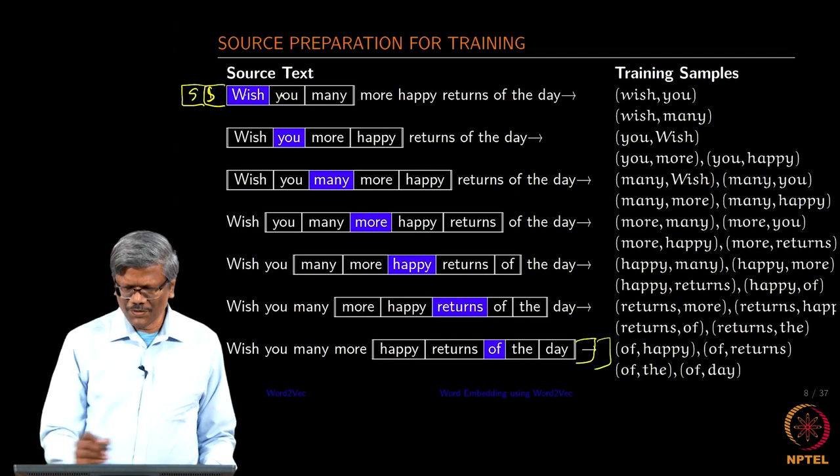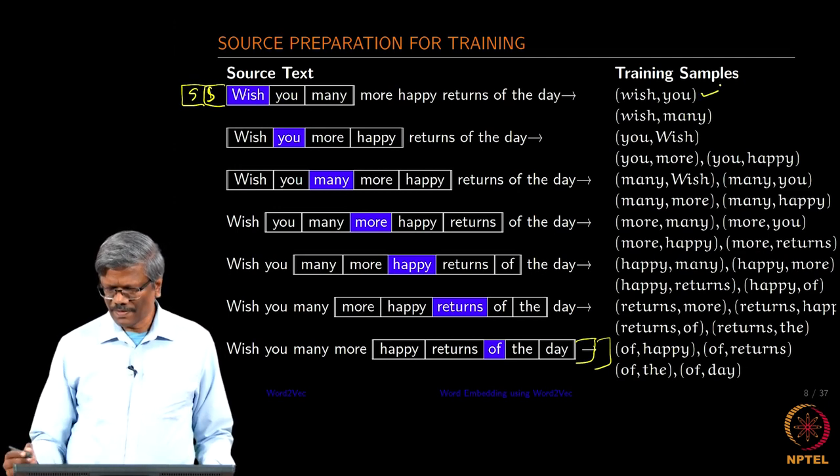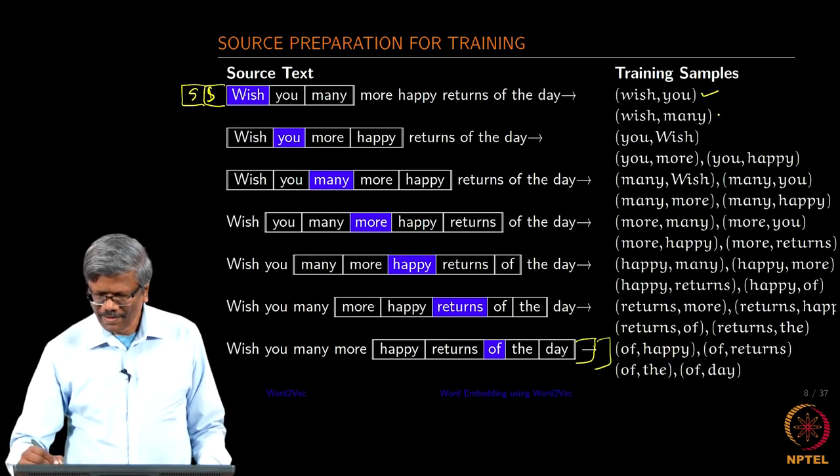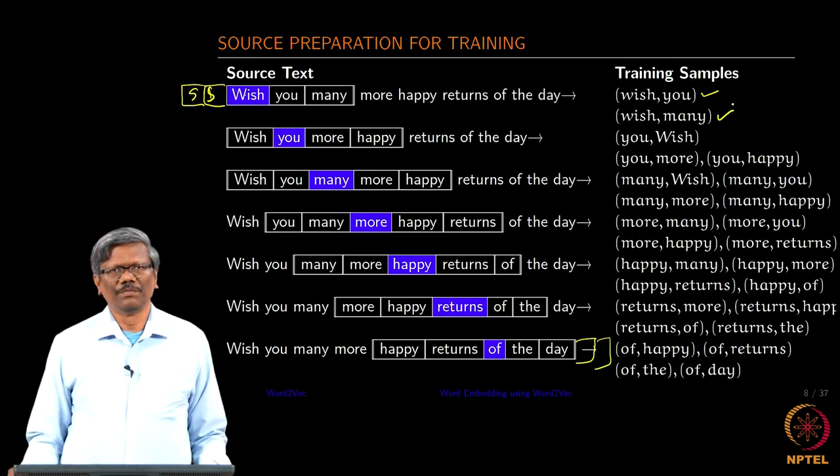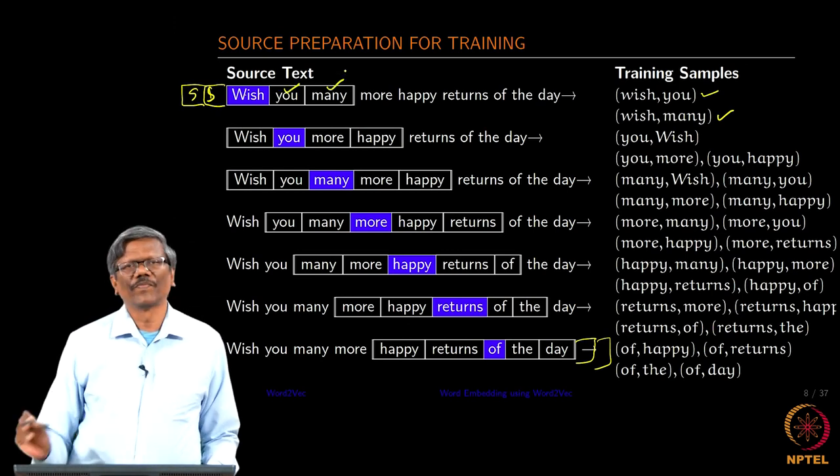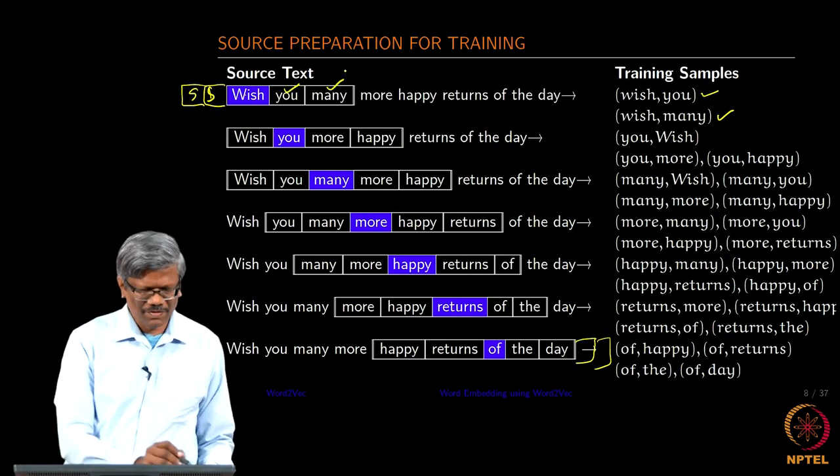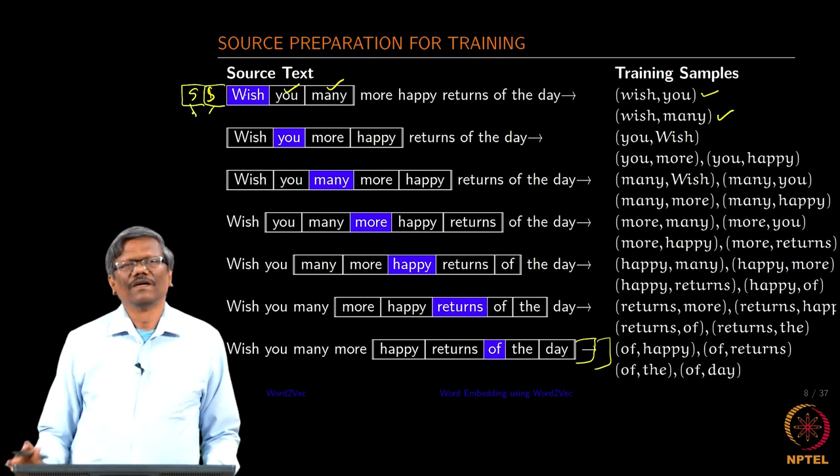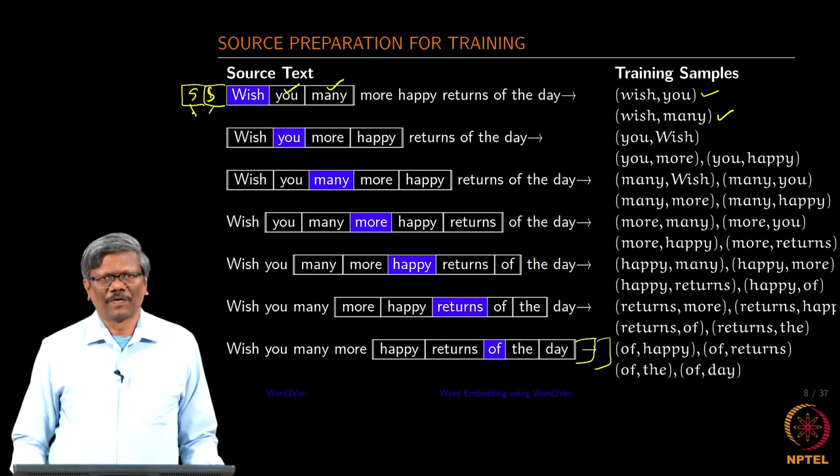Now wish you as one, and then we are capturing the bigrams of each of those in this case, and then wish many. We have you and many as the context word for wish. We are ignoring the start symbol for the moment here.